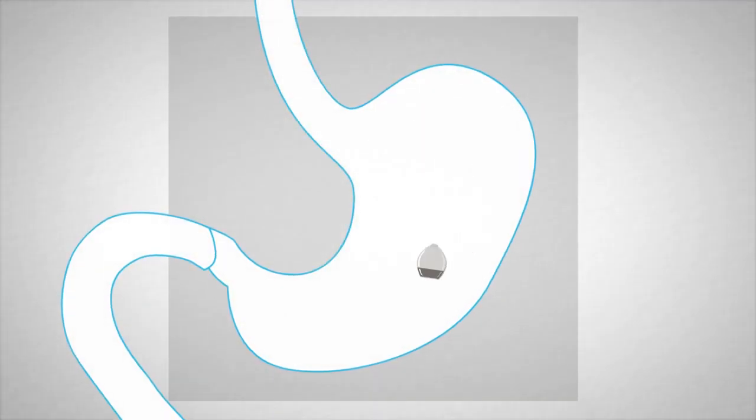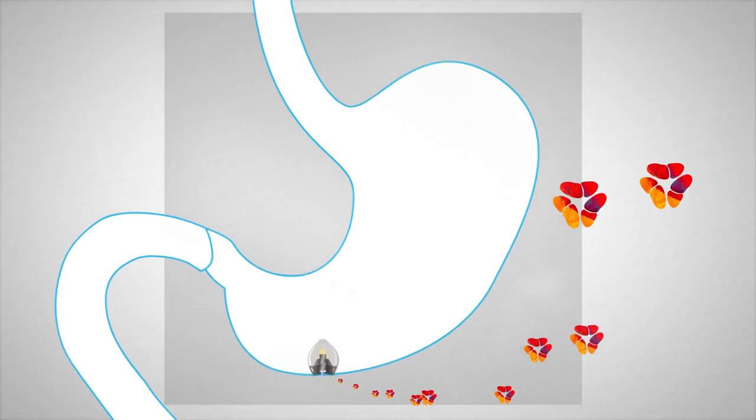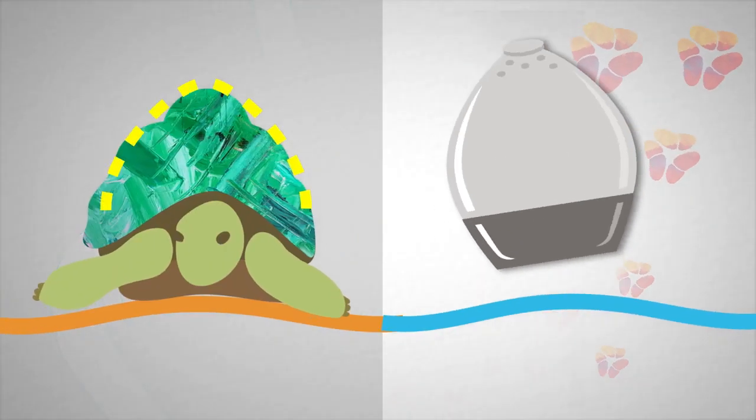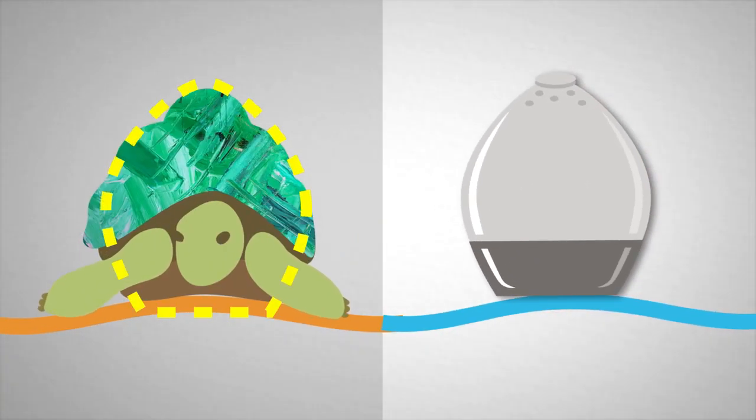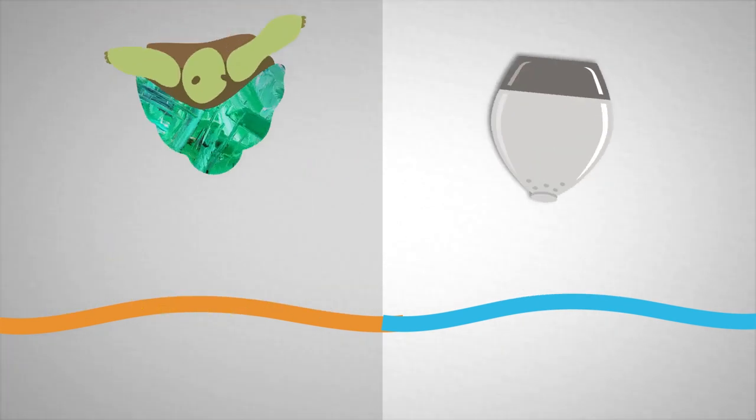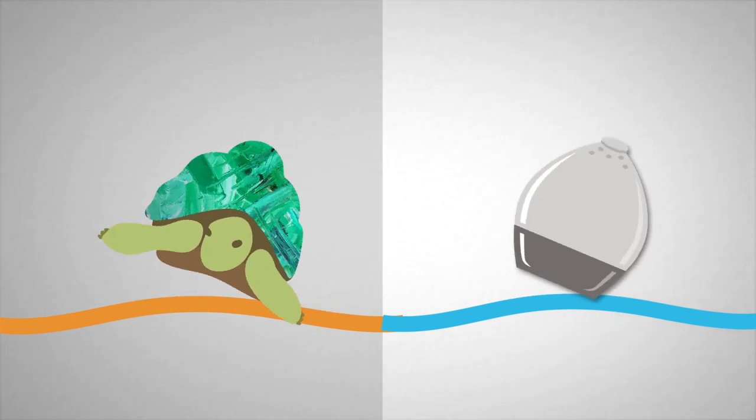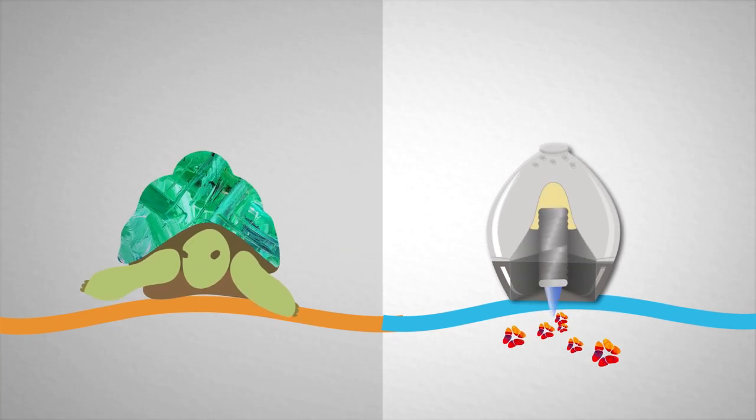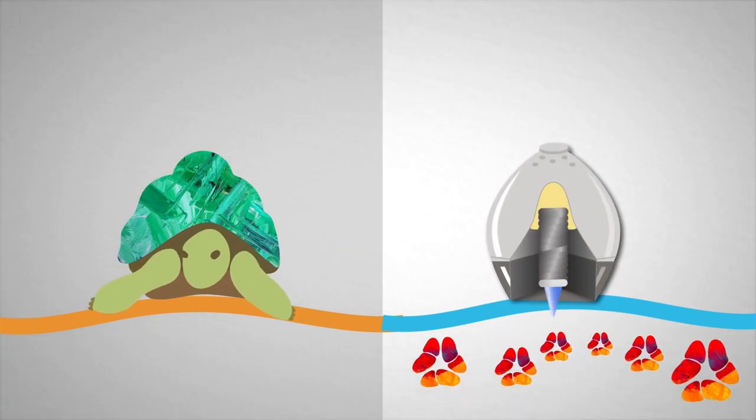After a patient ingests the capsule, it autonomously inserts insulin into the top layers of stomach tissue. Inspired by the unique shape of leopard tortoises which allow them to self-right from any orientation, the team designed a novel system with the ability to consistently orient and release the drug into the tissue wall.